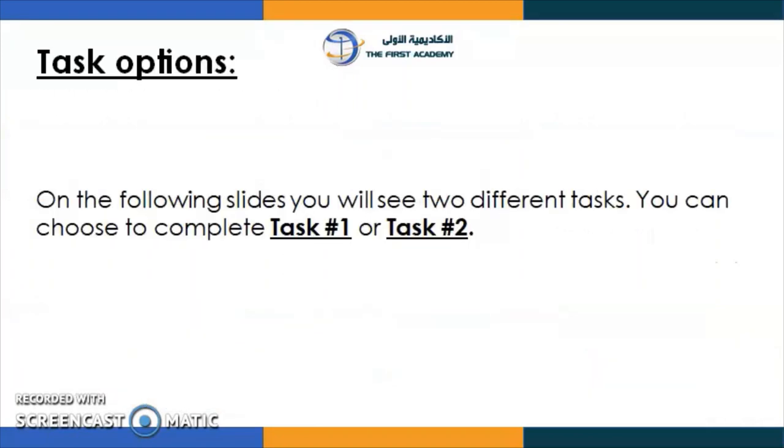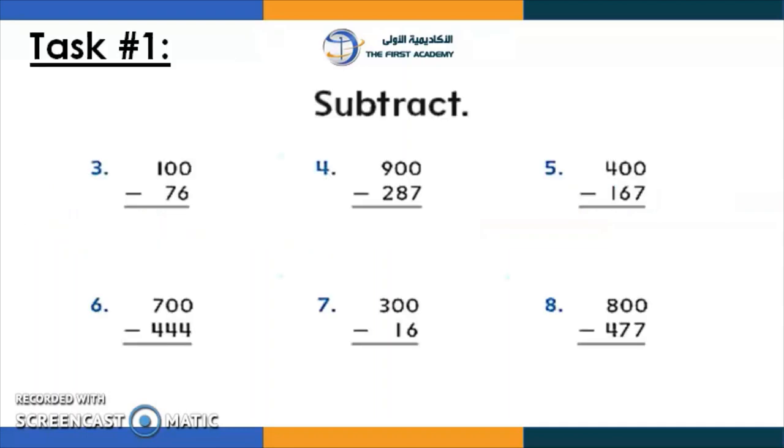So everyone, here, task number 1 and task number 2. It's up to you if you want to do two of them. Or, as you like, you can choose 1. So here also, you're going to subtract across zero. So remember the steps. You need to go and borrow from the hundreds place. If, as you can see, there is zero in the ones place and zero in the tens place. So you can go to the hundreds place to borrow from there.